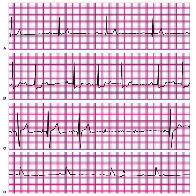Coming to third degree, you see the P waves here and the QRS complexes here, and they have almost no relationship to each other. No atrial impulses are reaching the ventricles, and ventricular rhythm is maintained by a slow escape mechanism — almost 30 beats per minute. At this point patients develop fatigue, lightheadedness, and syncope.